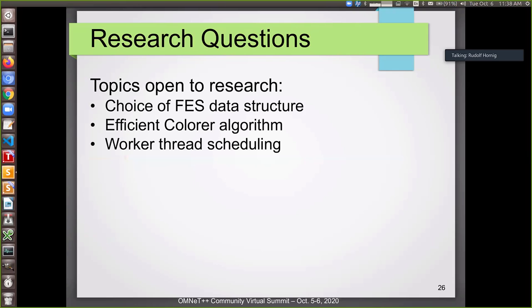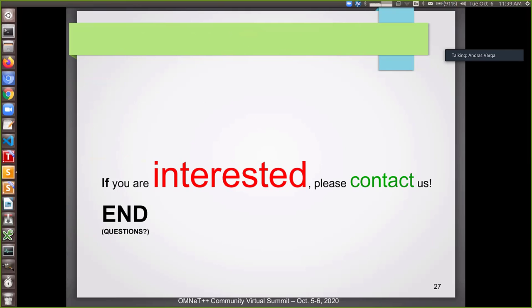András, if you wrap up. Yeah. Good timing because this is the summary slide now. So if someone's thinking about doing this kind of research, then what can you publish about? So there's some things like the choice of the future events data structure, like lock free data structure and so on. Efficient coloring algorithm. There are a lot of degrees of freedom here. And also worker thread scheduling. And I should say that this idea is quite novel. So I haven't seen many papers or actually as far as I know, there are no simulators like generic purpose simulation frameworks which do this kind of simulation or provide usable scalable solutions. So we come to our last slide. So if you're interested, please contact us. Thank you.